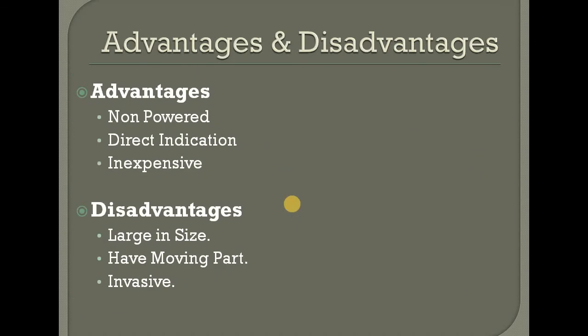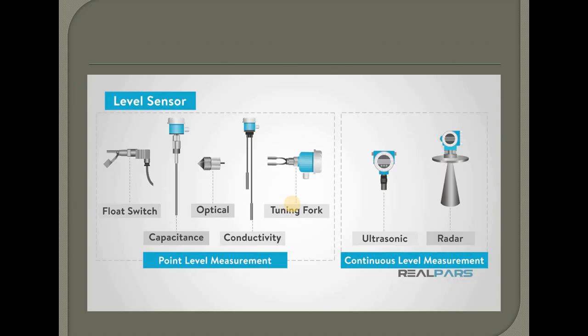Advantage and disadvantage: non-powered and direct indication and inexpensive. Large in size, have moving parts, invasive. Moving parts are a concern with level sensors. This is the point level measurement and continuous level measurement. In point level measurement: float switch, capacitance level sensors, optical, conductivity, and tuning fork point level sensors are discussed. We will discuss the continuous level measurement system in the next class. Thank you.